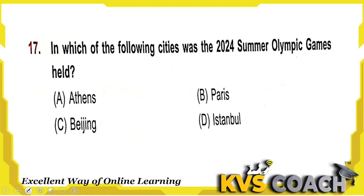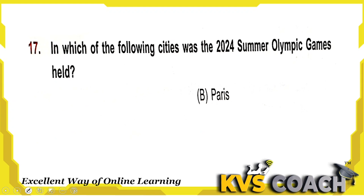Next: in which of the following cities was the 2024 Summer Olympic Games held? The 2024 Summer Olympic Games were held in Paris. Option B is the right answer here.